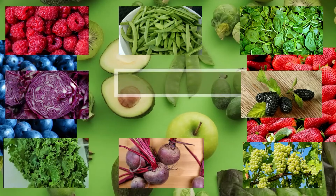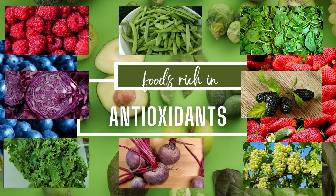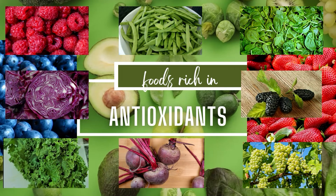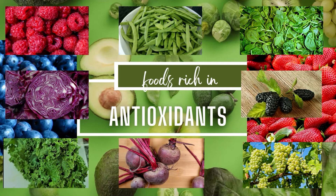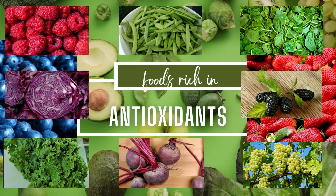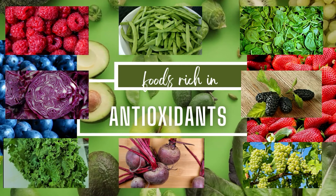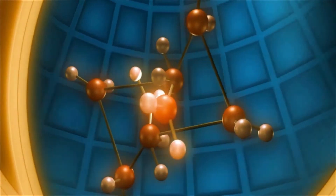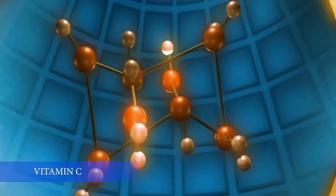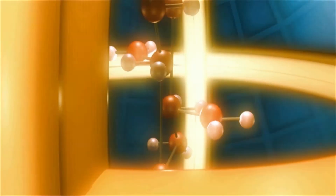You can try these antioxidant-rich foods: pecans, blueberries, strawberries, raspberries, kale, red cabbage, beans, beets, spinach, mulberry, and grapes. These contain antioxidants such as vitamin C or ascorbic acid and many more antioxidants that reduce skin aging and pigmentation.